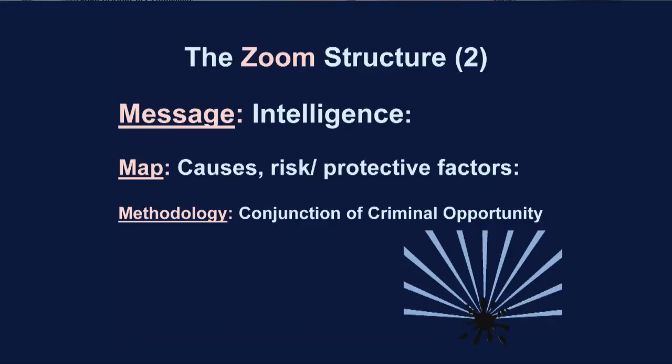Thinking about an intelligence task, one element, one map-level heading is causes and risk and protective factors. Then under causes, the methodology is the conjunction of criminal opportunity.